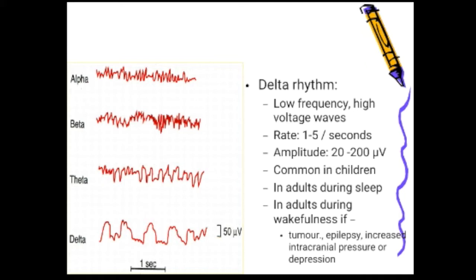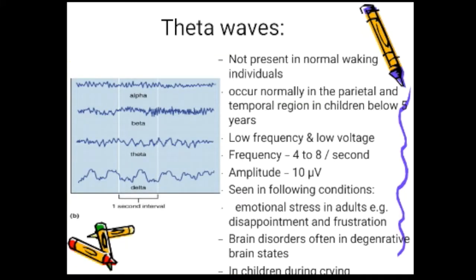Delta waves are low-frequency, high-voltage waves with frequency 1 to 5 per second and amplitude 20 to 200 microvolts. They are common in children; in adults they are present only during sleep. If present during wakefulness in adults, they indicate tumor, epilepsy, increased intracranial pressure, or depression. Theta waves are not present in normal waking individuals; they occur in the parietal and temporal regions in children below age 5. Frequency is 4 to 8 per second, amplitude about 10 microvolts. They appear in emotional stress, degenerative brain disorders, and in children during crying.